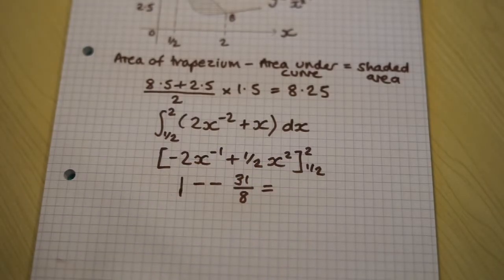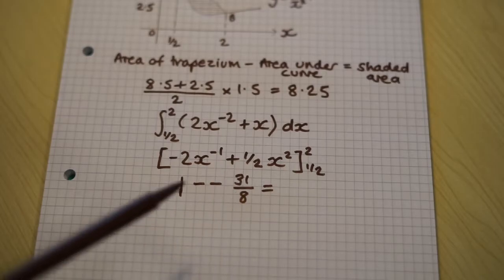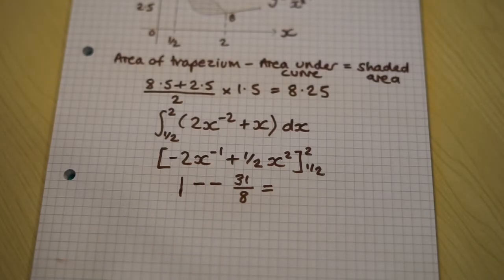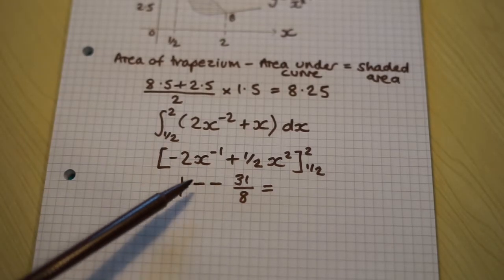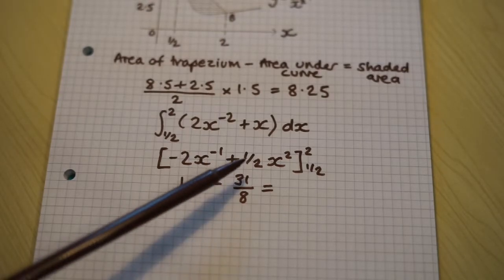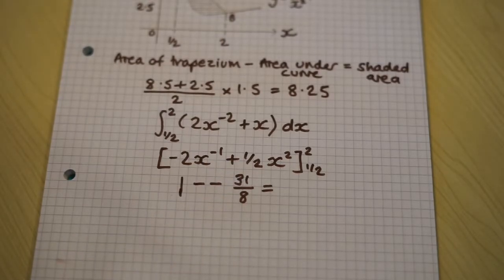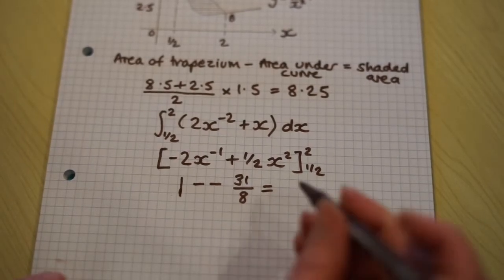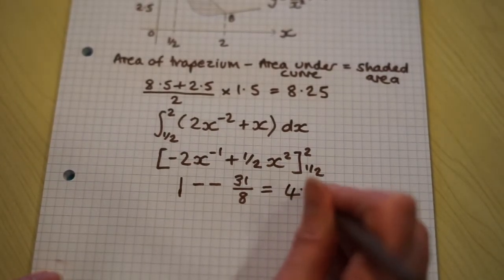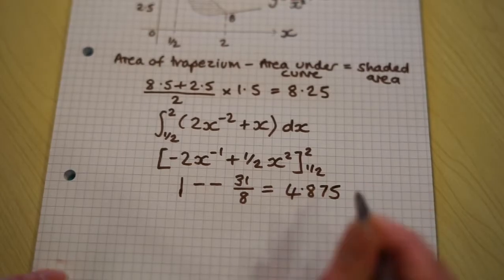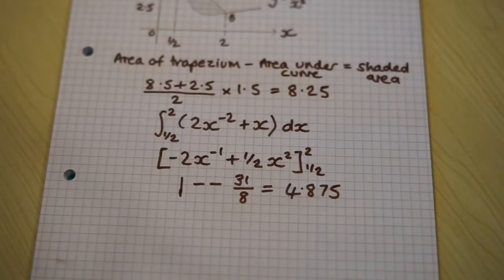So when we substitute half in there, we get negative 31 over 8. So we have to do 1 minus minus 31 over 8. And that is that.